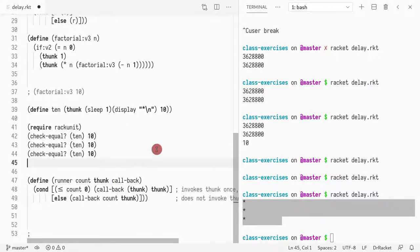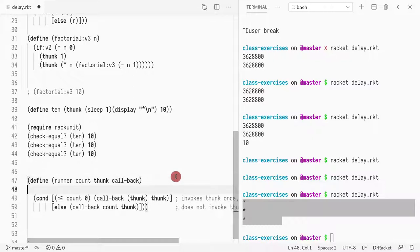For the sake of discussion, I have this example where we have a function called runner that has a number and then a thunk given as a parameter, and then it has some callback, some continuation. What the function runner is doing is if the value is smaller or equal to zero, then you're going to call the callback once; otherwise, you're not going to call the callback at all the thunk. So regardless of what you're going to do, you're going to call the callback.